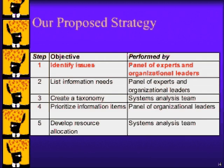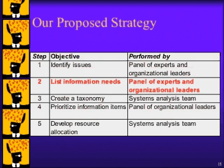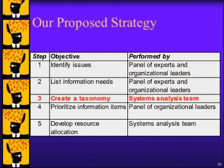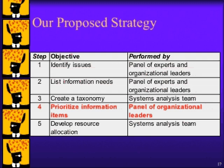I recommend assessing information needs through five steps. First, a panel of experts identifies future decisions and issues that the organization is likely to face. In step two, they list the information needed within each future decision — not what information they need in general, but within a particular context. In step three, the analyst creates a taxonomy of information items, putting related pieces of information together to see if there is a need for a piece of information across decisions. In step four, the panel of organizational leaders are asked to prioritize the information needs. In the last step, this information is used to develop resource allocation plans for data collection and data storage.